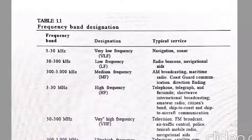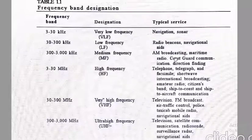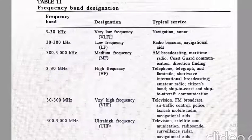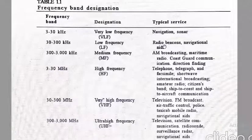Looking at frequency band designations and their typical services: 3 to 30 kHz is Very Low Frequency (VLF), used for navigation. 30 to 300 kHz is Low Frequency (LF), used for radio signals and navigational aids. 300 to 3000 kHz is Medium Frequency (MF), used for direction finding, broadcasting, and coast guard communication systems.